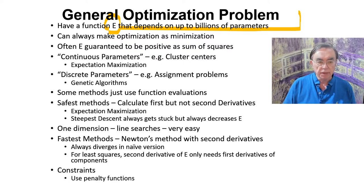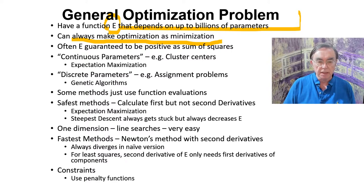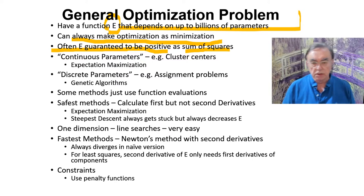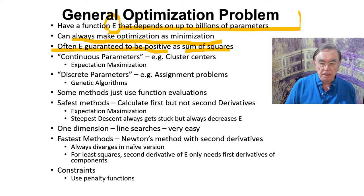We can always make optimization a minimum — you just take the minus sign if it's a maximum. If a function has to be maximized, you take its minus sign so it has to be minimized. In most cases, even in very hard cases, E is guaranteed to be positive, as it is the sum of squares. And we saw chi-squared, deep learning, and so on.